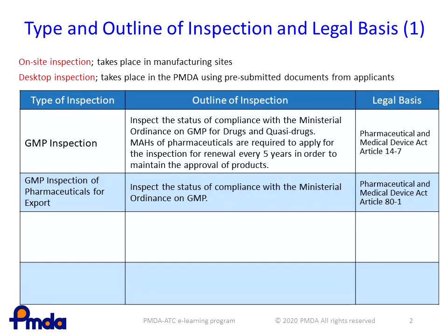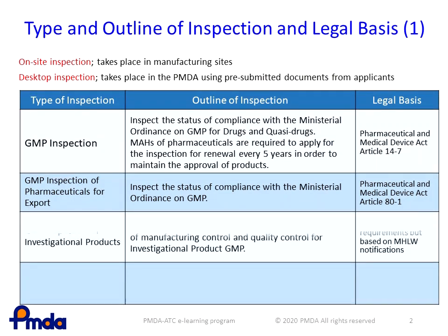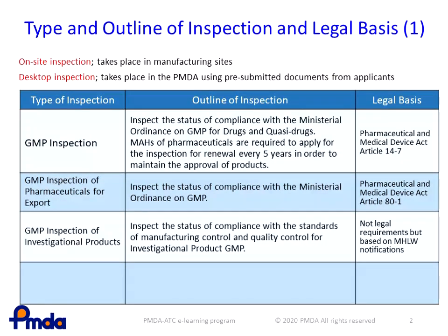GMP inspection for pharmaceuticals for export is performed in cases where a compliance certificate issued by the Government of Japan is required in accordance with the regulations of the destination country of export. A certificate of compliance with requirements in the notification of the investigational product GMP is issued only in the case that a clinical trial is underway or scheduled in Japan, and the destination country of export requires the submission of a certificate of investigational product GMP issued by the Government of Japan.